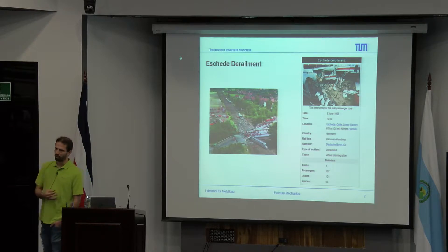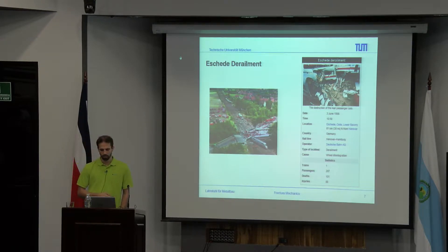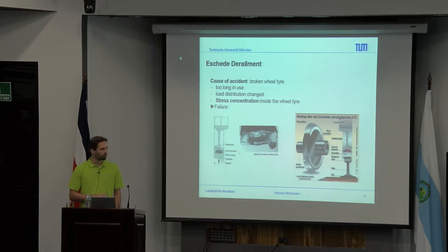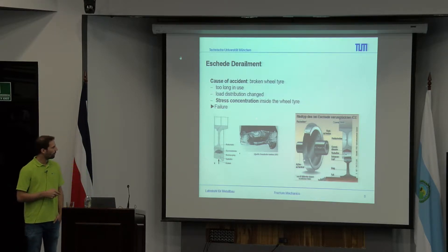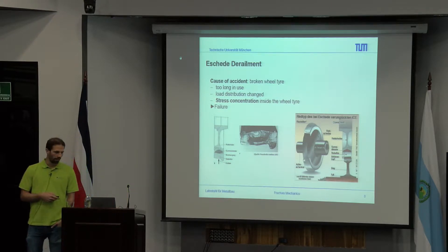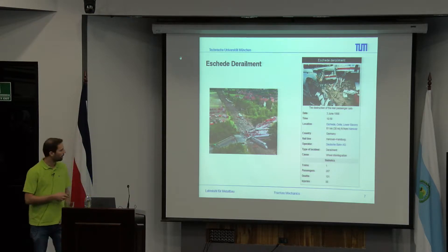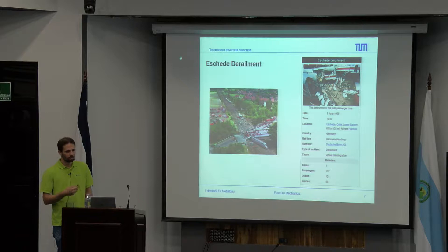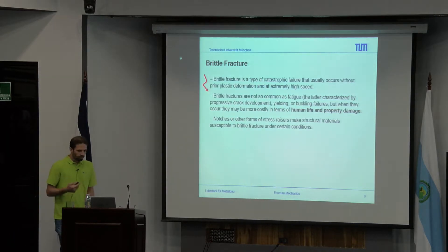Another accident, more well-known to German students, is the 1998 crash of the ICE — the high-speed train in Germany. There was a material defect in the wheel. Due to a combination of rubber and a really thick steel wheel of around 60 millimeters, a crack appeared inside which could not be detected by NDT tests. At the end, the wheel failed at high speed and the train crashed into a bridge — 100 people died and 80 were injured.